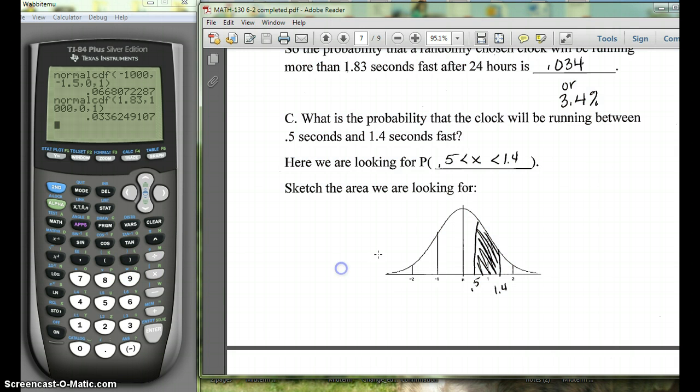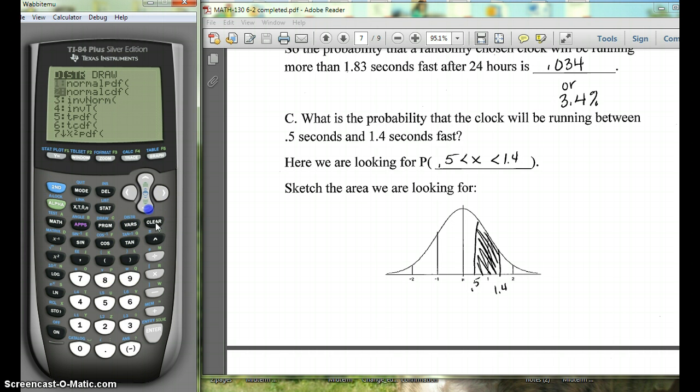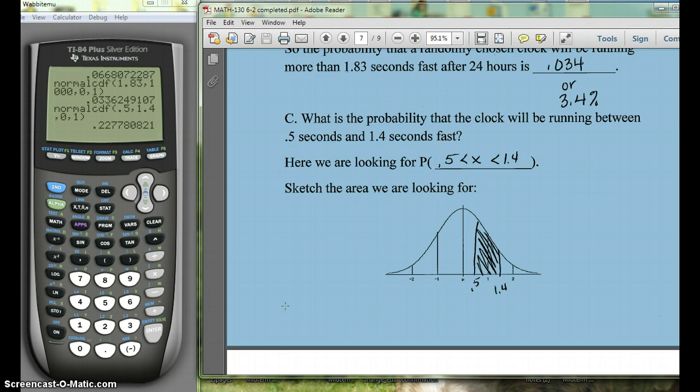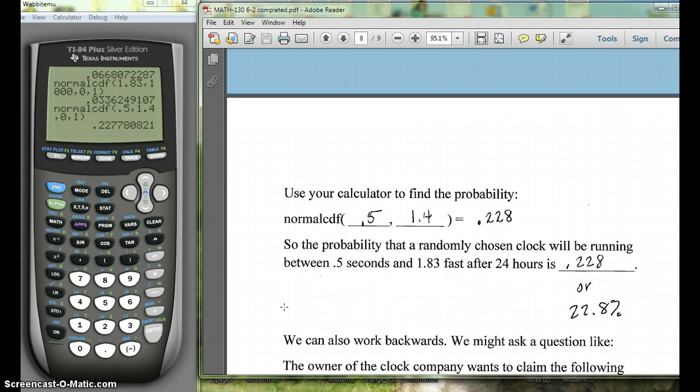And then finally, the other kind is if you're between two values. So here we want to know what's the probability a clock will be running between 0.5 seconds and 1.4 seconds fast. So second vars normal CDF. So here our lower is 0.5. Our upper is 1.4. This is still the standard normal, so we'll leave those. And here we get 0.228.